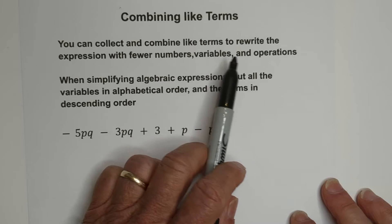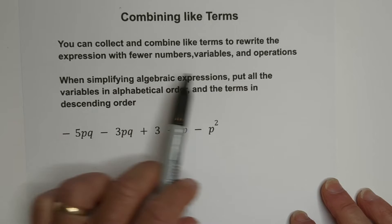You can collect and combine like terms to rewrite the expression with fewer numbers, variables, and operations.